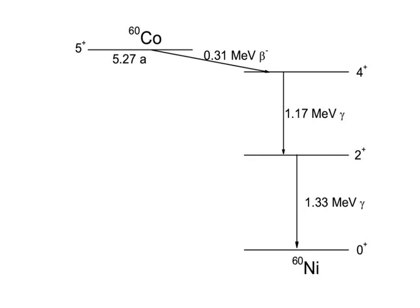It is useful to think of the decay scheme as placed in a coordinate system, where the ordinate axis is energy, increasing from bottom to top, and the abscissa is the proton number, increasing from left to right.